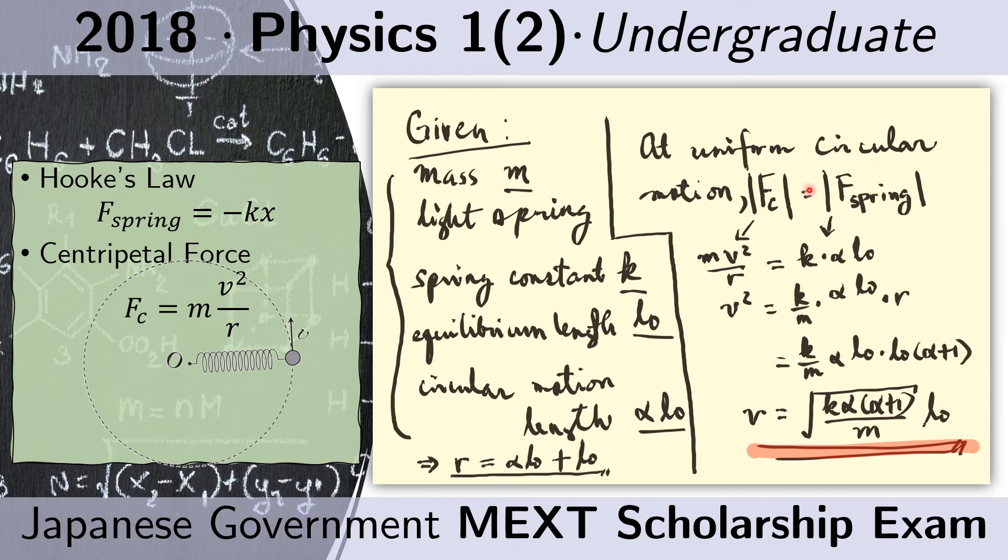Now, at uniform circular motion, the centripetal force is equal to the force applied by the spring. What that means is that the source of this centripetal force is the spring. It's the spring that keeps this ball or this object from straying away from its orbit. And that's the only force available here.